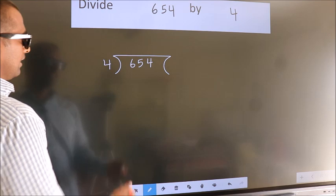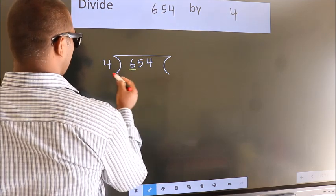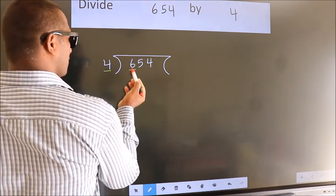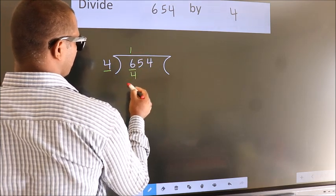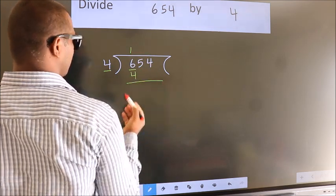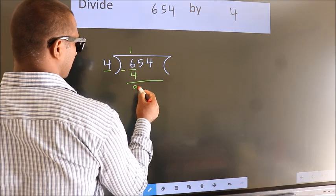Next, here we have 6, here 4. A number close to 6 in the 4 times table is 4 once, which is 4. Now we subtract and get 2.